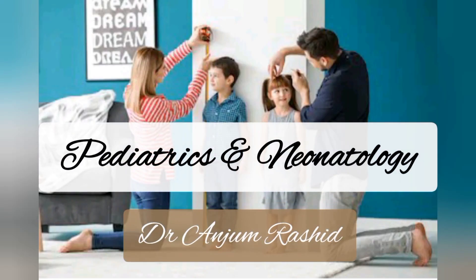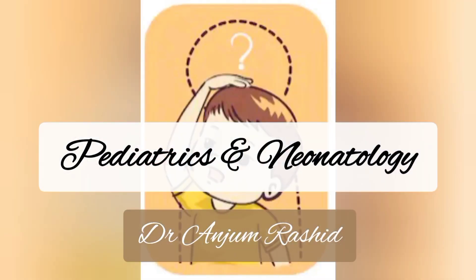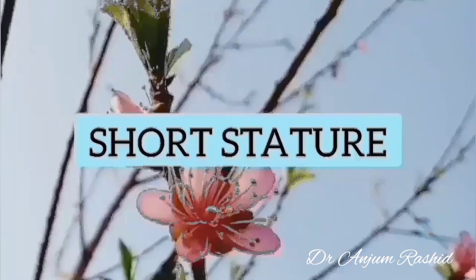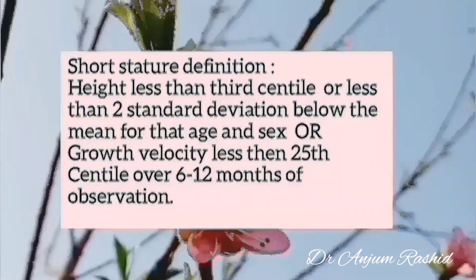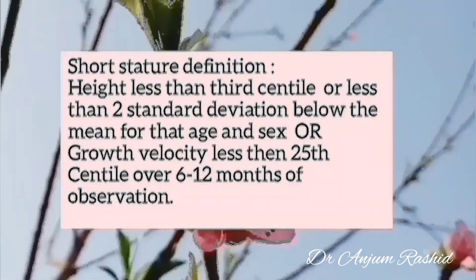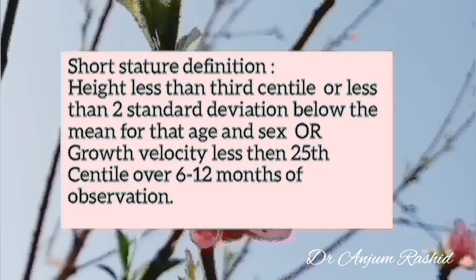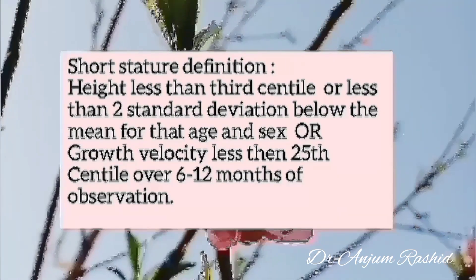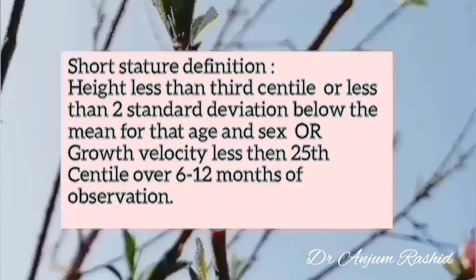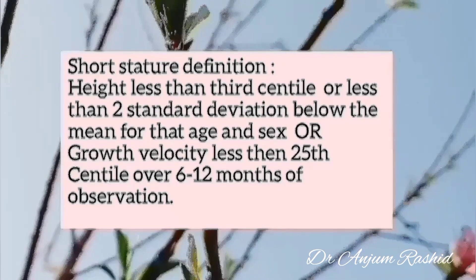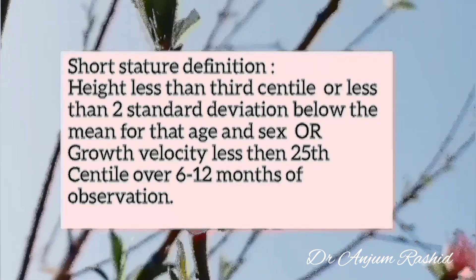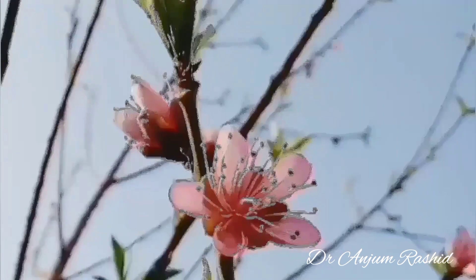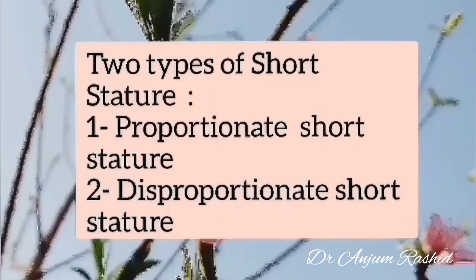Hello friends, welcome to Pediatrics and Endocrinology. This video is about short stature in children. First, the definition of short stature: it is height less than the third centile, or less than two standard deviations below the mean for age and sex, or growth velocity less than the 25th centile over 6 to 12 months of observation.